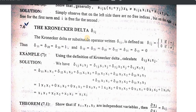We will use this expression in an example. Example number seven: using the definition of Kronecker delta, calculate delta ij x i x j. This is the expression we need to evaluate.